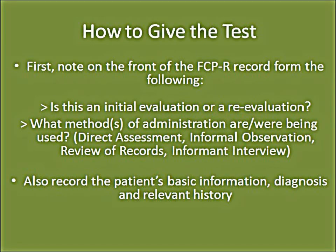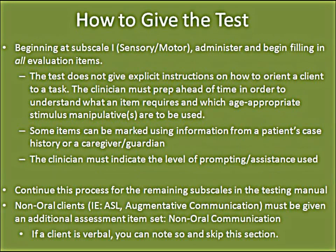To administer the test: first, note on the front of the FCPR record form whether this is an initial evaluation or re-evaluation, what methods of administration are being used, and record the patient's basic information, diagnosis, and relevant history. Beginning at subscale 1, administer and fill in all evaluation items. Note that the test does not give explicit instructions on how to orient a client to a task — the clinician must prep ahead of time. Some items can be marked using information from a patient's case history or caregiver. The clinician must indicate the level of prompting or assistance used. Non-oral clients must be given the additional non-oral communication assessment item set; verbal clients may skip this section.